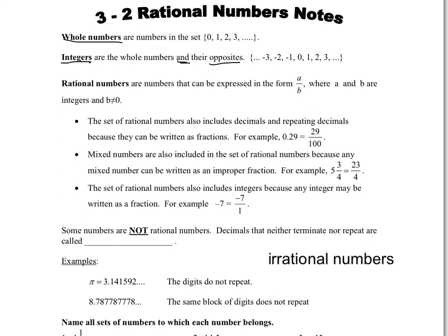Now rational numbers includes whole numbers and integers, but what it adds in is any numbers that can be expressed in the form A over B, where A and B are integers and B is not 0. So in other words, you can make them fractions.